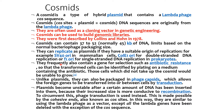They frequently also contain a gene for selection, such as antibiotic resistance, so that the transformed cells can be identified by plating on medium containing antibiotics. Those cells which did not take up the Cosmids would be unable to grow.